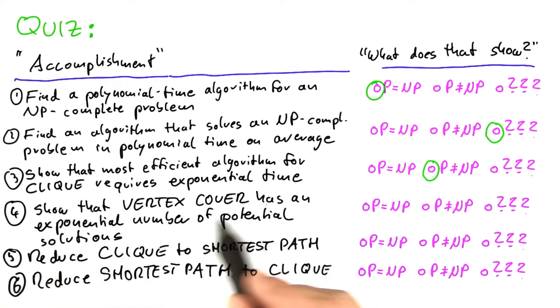Now, showing that vertex cover has an exponential number of potential solutions, that is similar to the example I pointed out to you in the beginning of this unit, namely that just having an exponential number of potential solutions does not mean that the problem is hard. It can mean that the problem is hard, but as you've seen in the case of shortest path, it's not necessarily so.